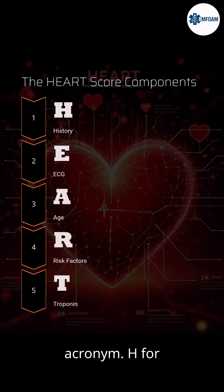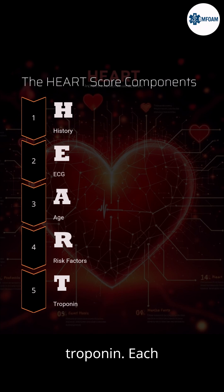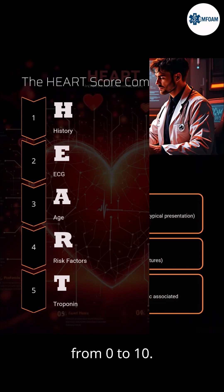HEART is an acronym: H for History, E for ECG, A for Age, R for Risk factors, and T for Troponin. Each is scored from 0 to 2, giving a total score from 0 to 10.